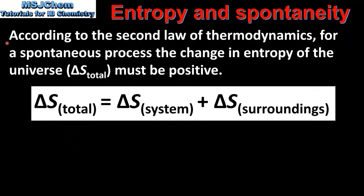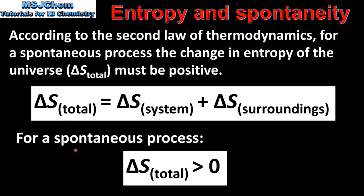According to the second law of thermodynamics, for a spontaneous process the change in entropy of the universe must be positive. The total change in entropy is equal to the change in entropy of the system plus the change in entropy of the surroundings. So for a spontaneous process the total change in entropy must be greater than zero.